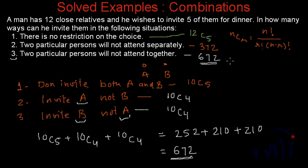This is a solid example based on combinations. We considered the situations and decided the calculations based on that. We also followed the rule of AND. After this we are going to take a few more solved examples based on combinations, all of different types. Keep watching and bye-bye till then.